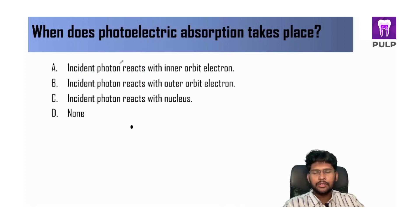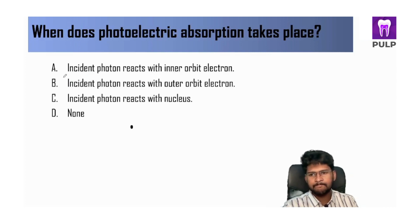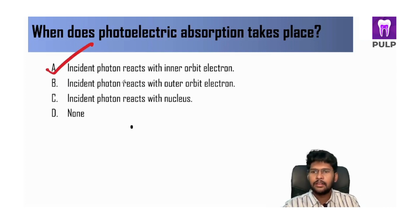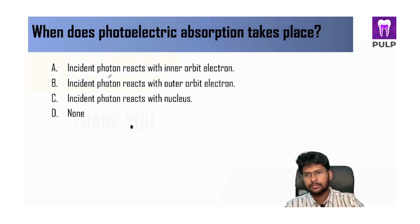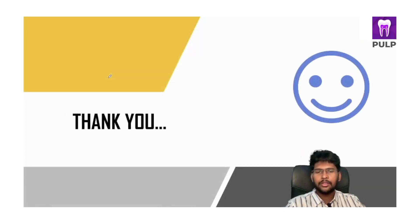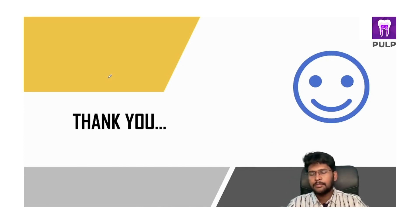Compton scattering is the most commonly seen interaction, accounting for 57% of interactions. Photoelectric absorption takes place when the incident photon reacts with the inner orbit electron. Thank you, hope you liked this session. We will create many videos like this — if you want any particular topic for discussion, please mention it in the comment section.